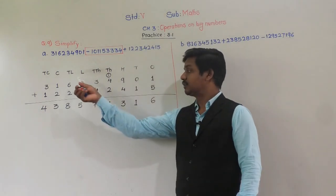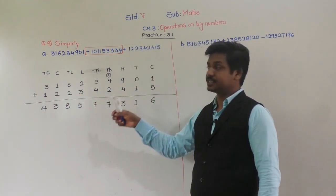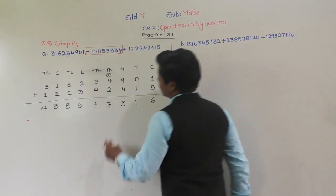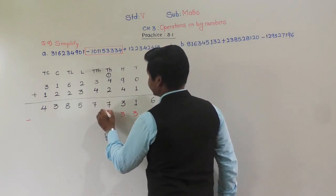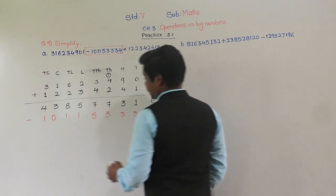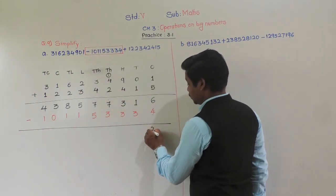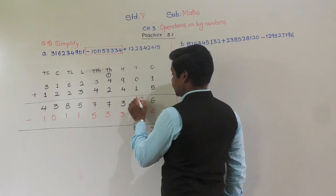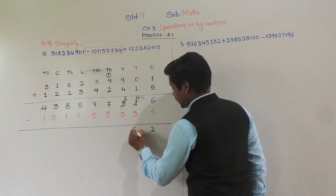Now from this sum of 43 crore 85,77,316, we will subtract the third number — 10 crore 11 lakh 53334. Subtracting: 6 minus 4 is 2. 1 minus 3 not possible, so borrow — 11 minus 3 is 8, that 3 becomes 2. 2 minus 3 not possible, so borrow — 12 minus 3 is 9, 7 becomes 6. 6 minus 3 is 3. 7 minus 5 is 2.